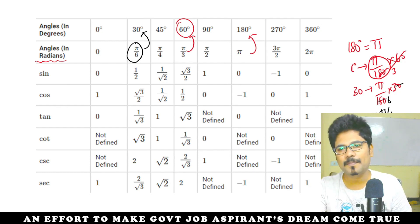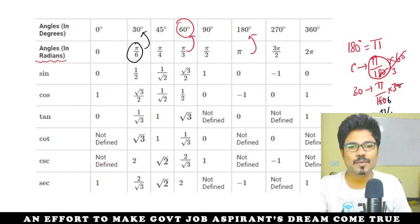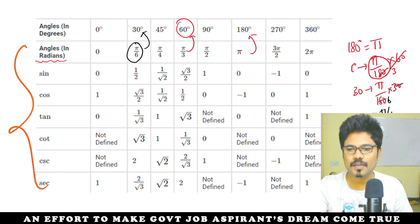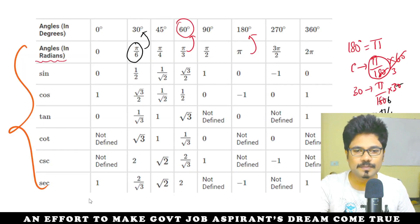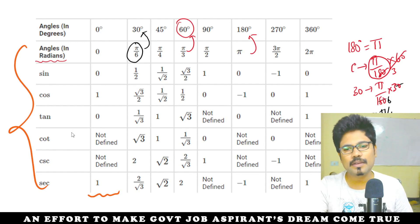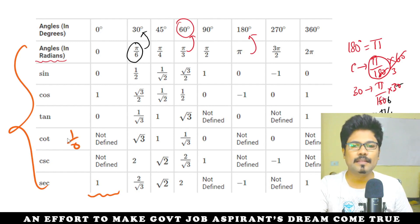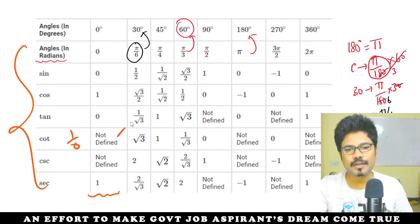This class will be very conceptual. Here is the table — you can take it up. Not defined means 1 by 0; we cannot define that. That is why it is not defined.